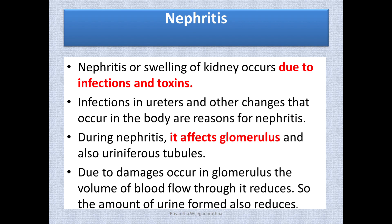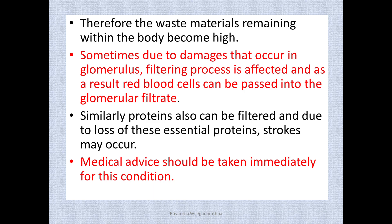The reason for nephritis includes infections in the urethra and other changes in the body. During this condition, the glomerulus of the nephron is affected, and sometimes the urinary tubules are also affected. Due to damage to the glomerulus, the volume of blood flowing through it reduces. Since ultra-filtration takes place inside the glomerulus, when it gets damaged, filtration decreases, and the amount of urine passed by the person drastically reduces — that is the main symptom.